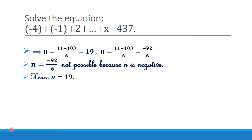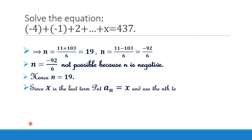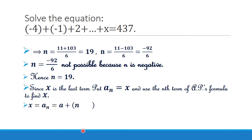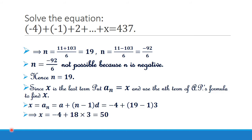Now we have to find the last term to solve for x in the equation. Since x is the last term, put A_n equal to x and use the nth term formula: x equal to A_n equal to a plus n minus 1 into d, which is equal to minus 4 plus 19 minus 1 into 3, equal to minus 4 plus 18 into 3, equal to minus 4 plus 54, equal to 50. Therefore, x equal to 50.